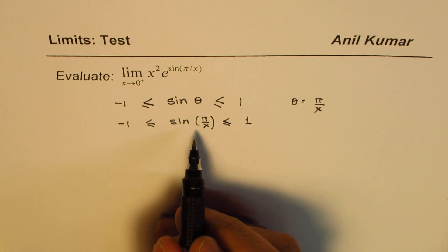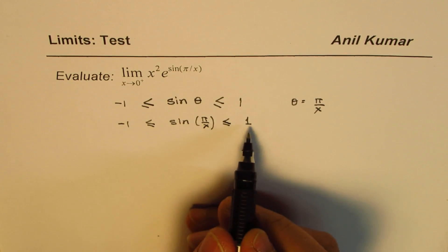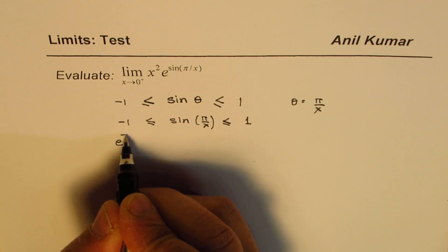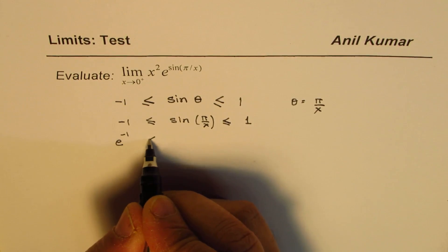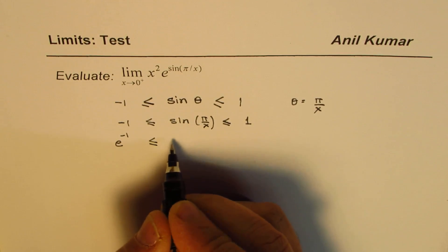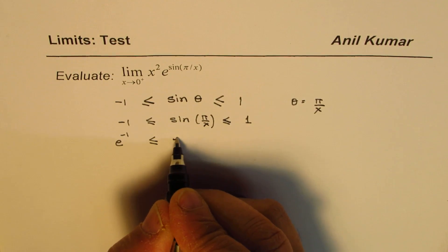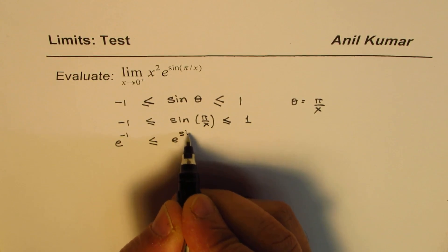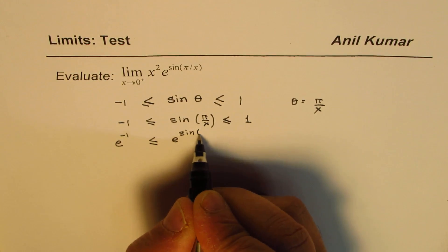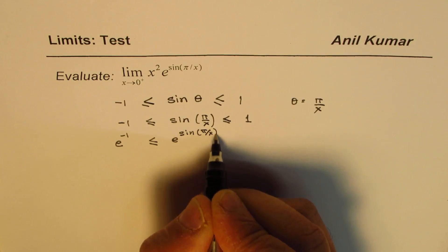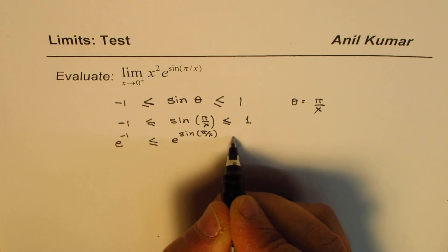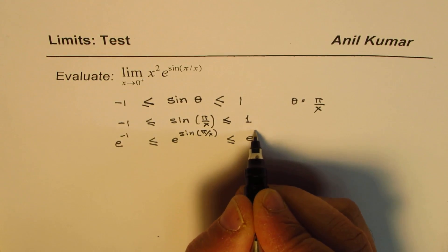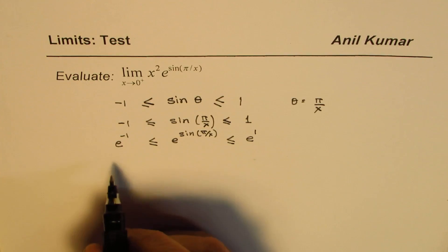Now, if I take e to the power of all these things, then I could write this as e to the power of minus 1 is less than or equal to e to the power of sine pi by x, which is less than or equal to e to the power of 1.